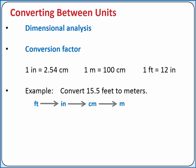Let's try it. We're starting with 15.5 feet. If we want to cancel out our units of feet, we need to multiply by a conversion factor that has feet in the denominator. Since 1 foot equals 12 inches, multiplying by 12 inches divided by 1 foot is like multiplying by the quantity 1.